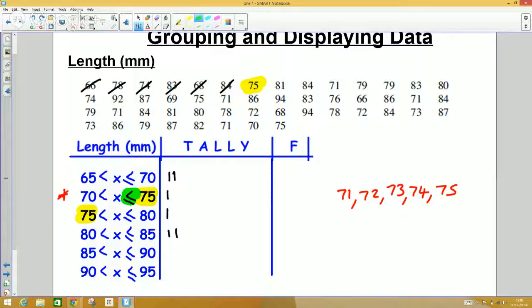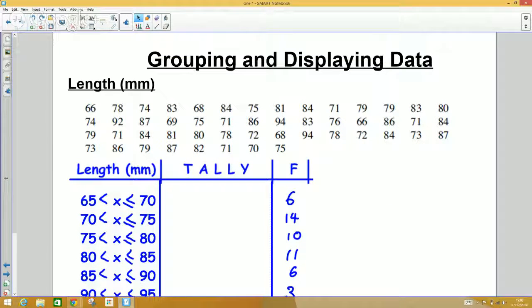You can now go back and know that 75 goes there. Let's just do one more to make sure. Say we've gone further on and we get to this one here. You've got to decide: does it appear in this category or this category? The correct one would be the first category here, so pop that one in.